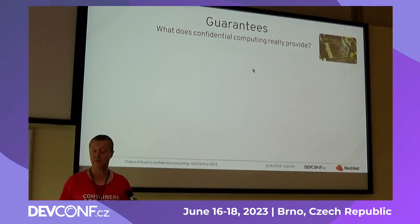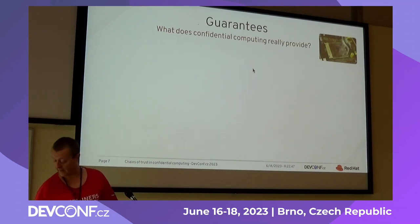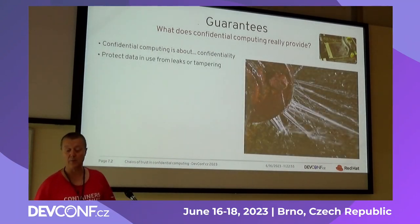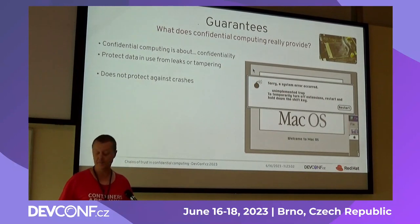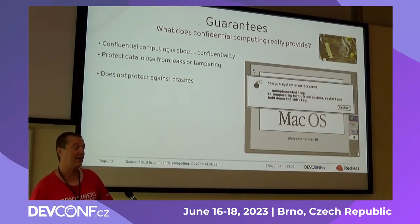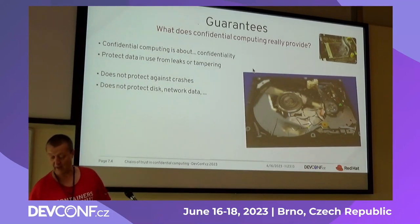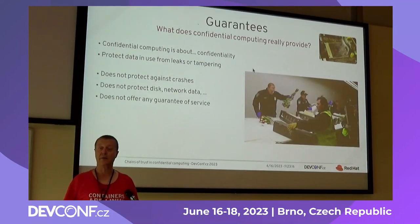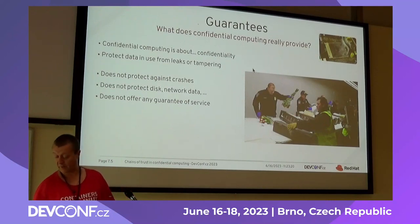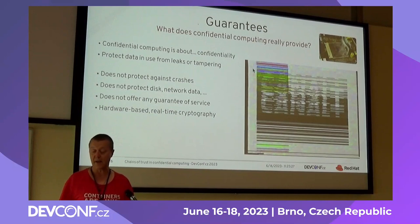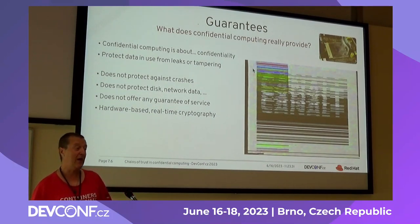What guarantees does confidential computing really provide? The thing we care about, as the name implies, is confidentiality — protecting data in use from leaks and tampering. However, we will not protect against crashes; we might make them more frequent because there are cases where we just say stop. We cannot protect disk or network data — that's really your role. There is no guarantee of service, and there is an increased risk of not having forward progress. It's all hardware-based cryptography, so with sufficient effort — NSA-level access — you might actually decrypt stuff.